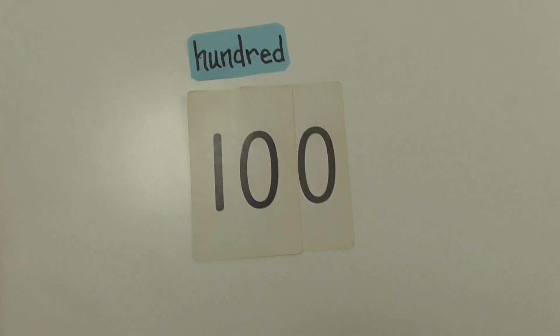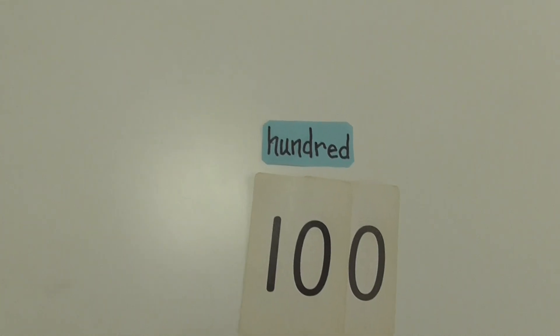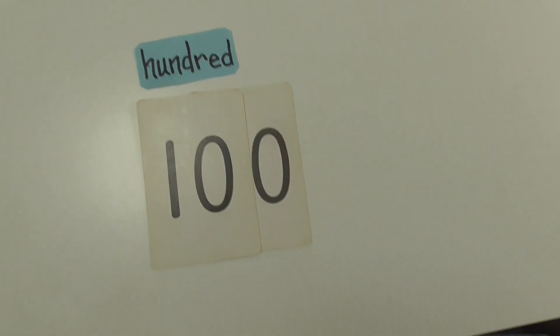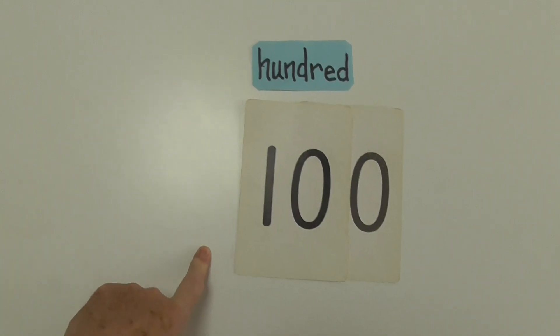So, 100, 200, 300, 400, 500, 600, 700, 800, 900. Next one is? Thousand. Okay.